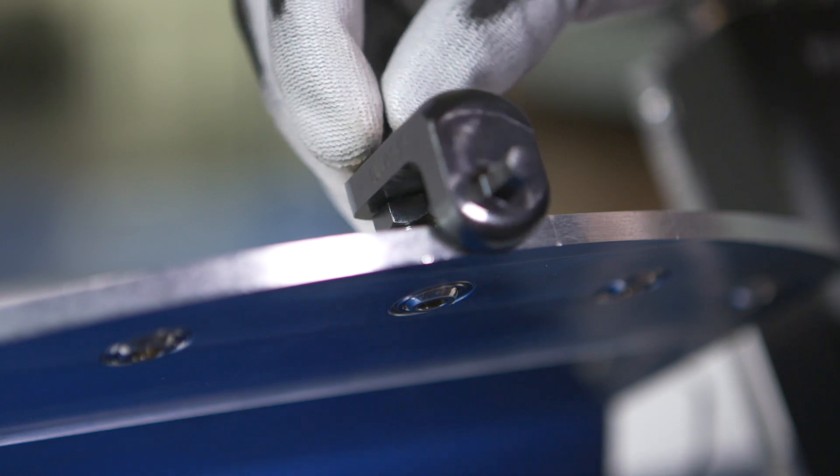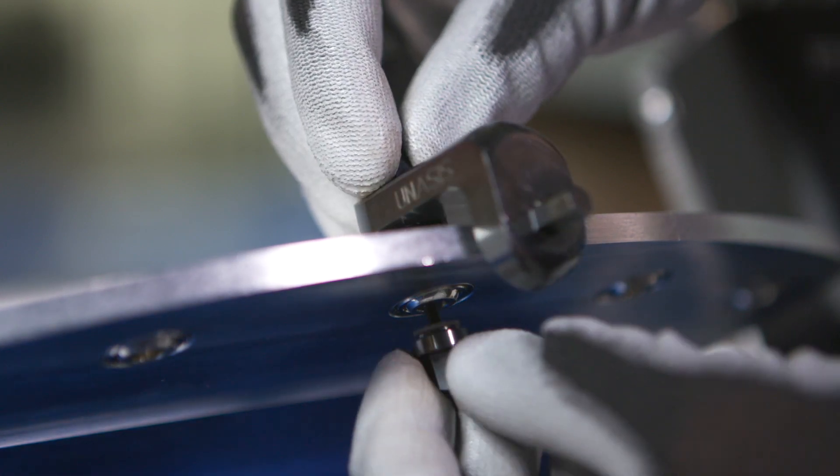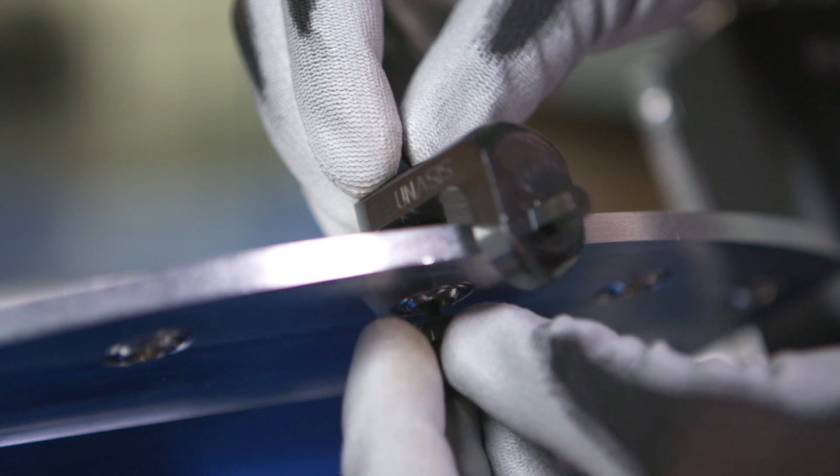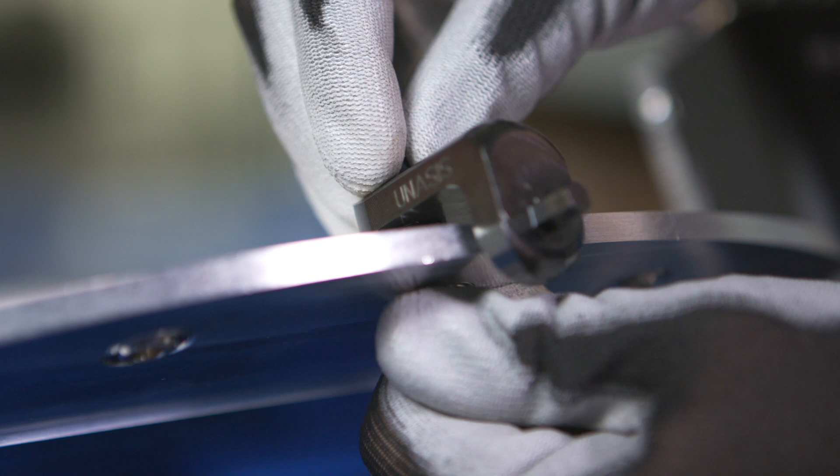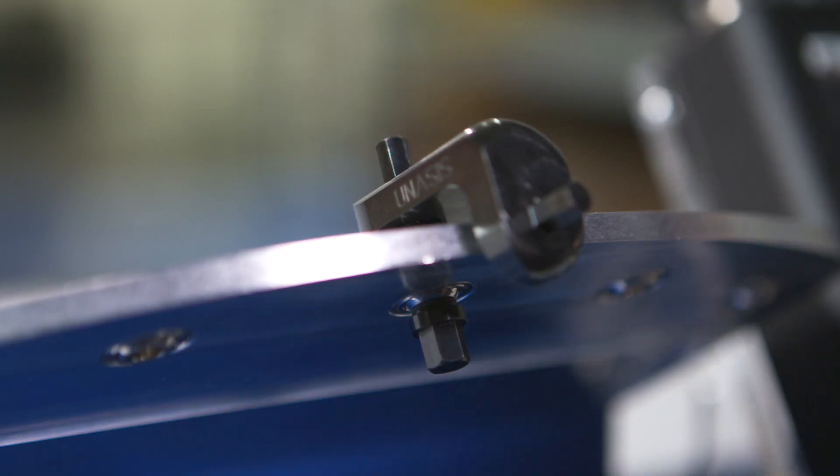Insert the shaft through the bore of the bearing. On the opposite side, thread the retention bolt into the shaft until finger-tight. Your swivel torque tool is now fully assembled.